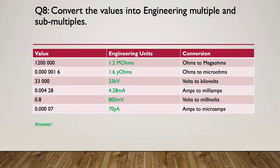And question 8's answer: We've got 1.2 mega ohms, then 1.6 micro ohms, 33 kV or kilovolts, then 4.28 milliamps, and 800 millivolts, and then finally 70 micro amps is the correct answer.